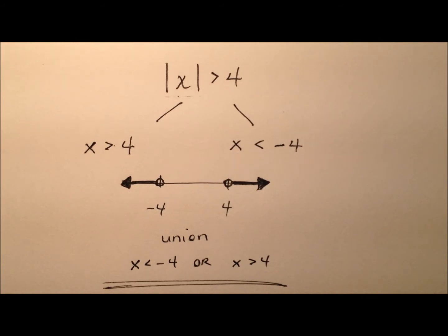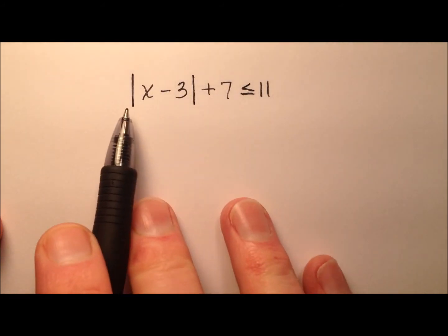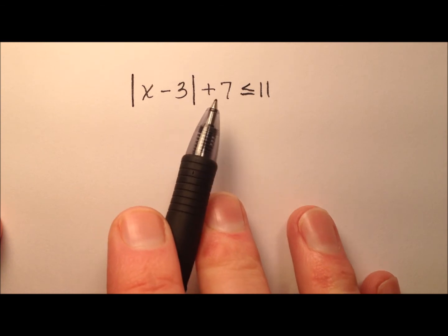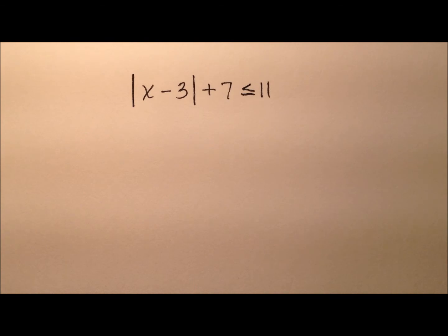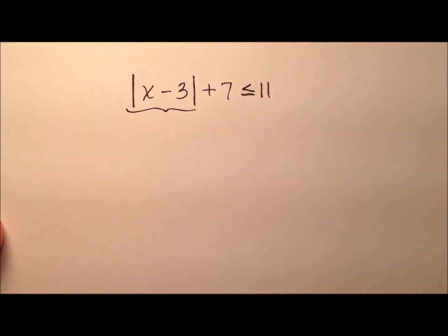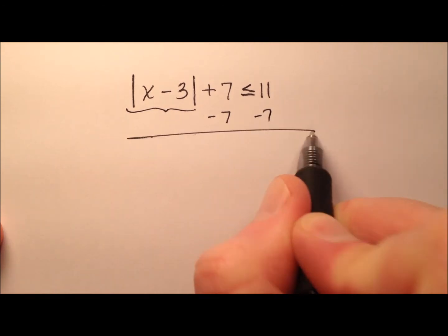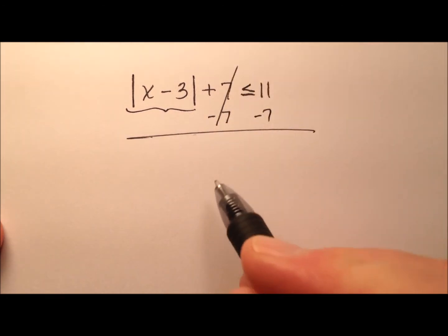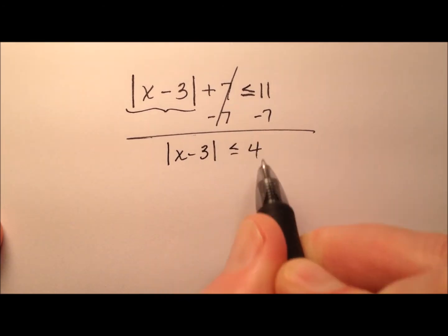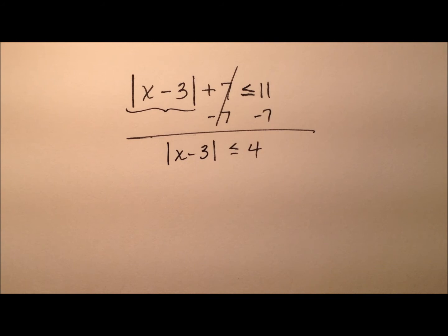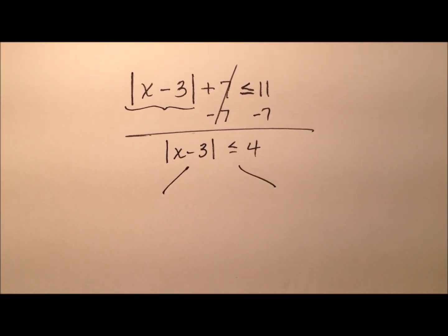In our second example, we have the absolute value of x minus 3, and we're going to add 7 to that. We're saying that expression is less than or equal to 11. In order to solve any absolute value equation or inequality, the first thing we need to do is isolate the absolute value expression. Let's do that by subtracting 7 from both sides of our inequality. So we'll have the absolute value of x minus 3 is less than or equal to 4. Now that our absolute value expression is isolated, let's break that down into two simple inequalities.